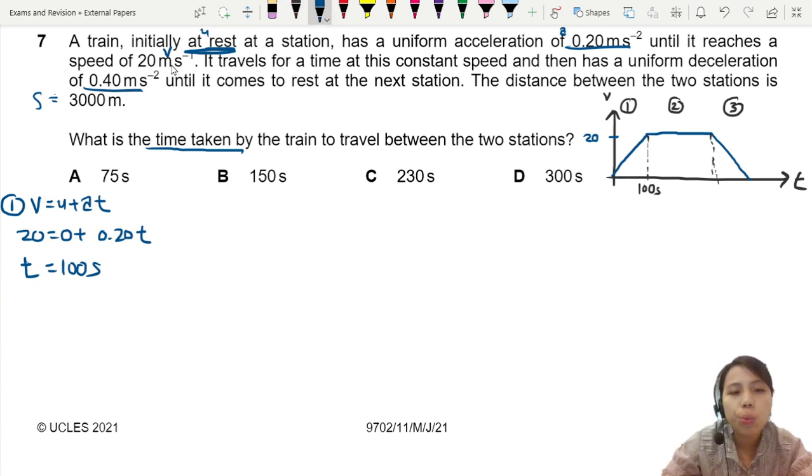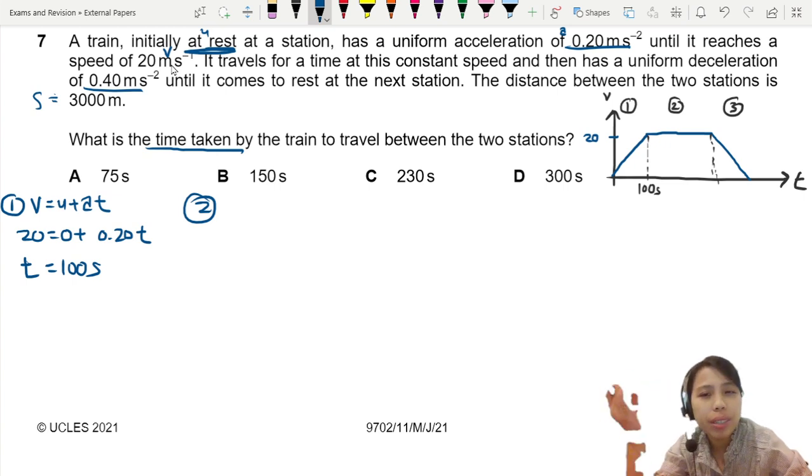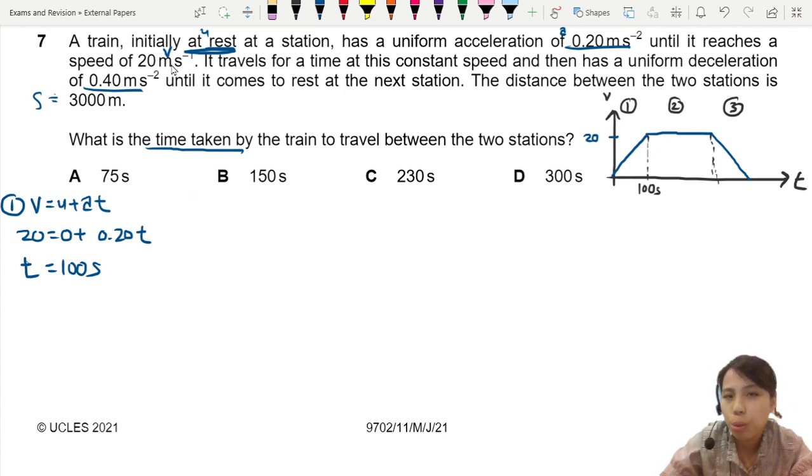Section 2. Do we have enough information? We only know the speed, don't really know time. Actually, we don't know much about section 2. We'll skip section 2, we'll come back to it later. Go section 3 first.